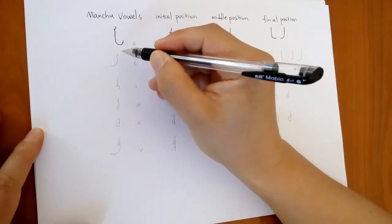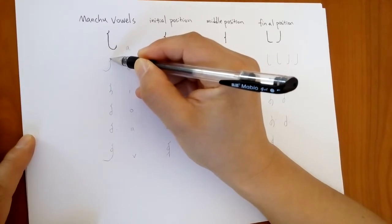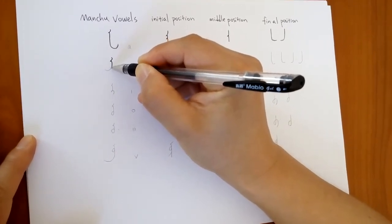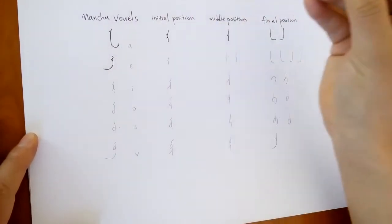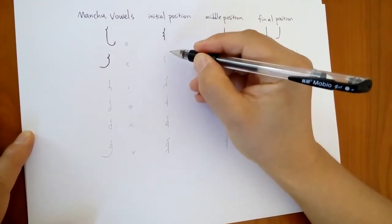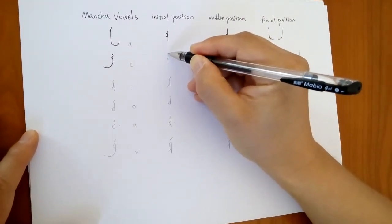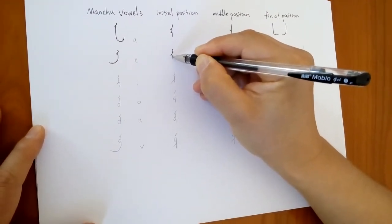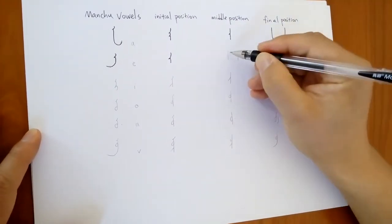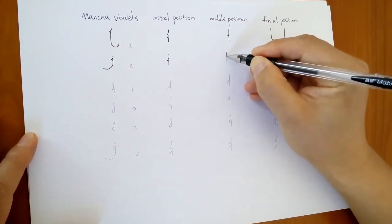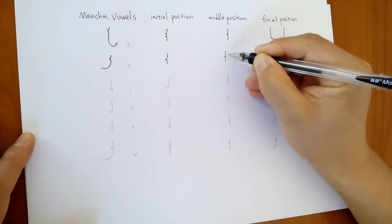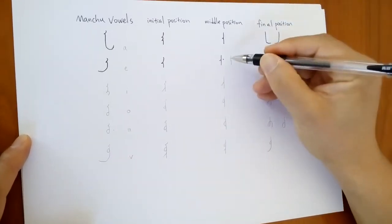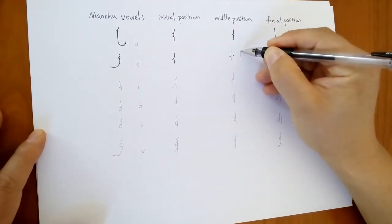Okay, let's look at A. It writes this way. Initial position. A in the middle with a dot or without a dot.